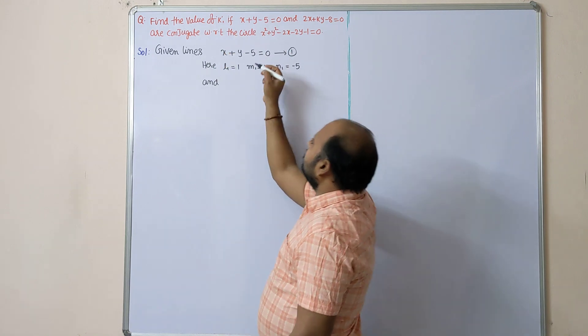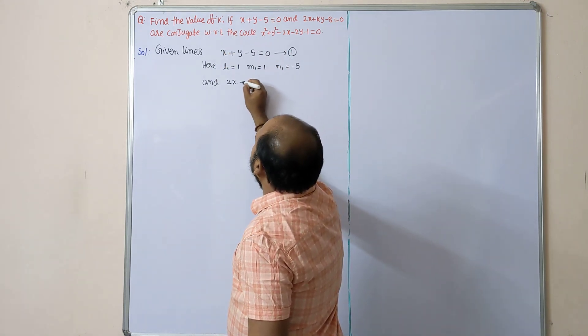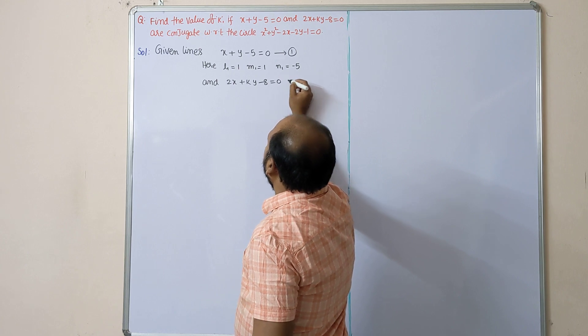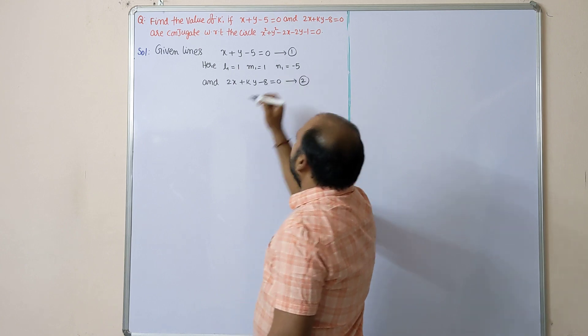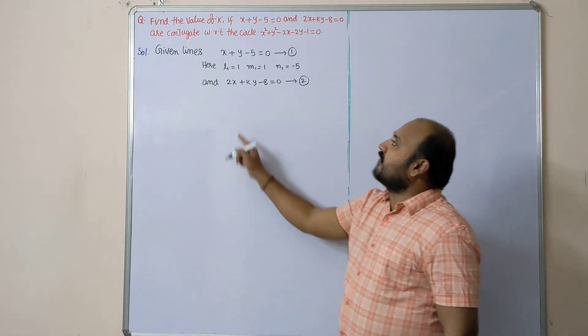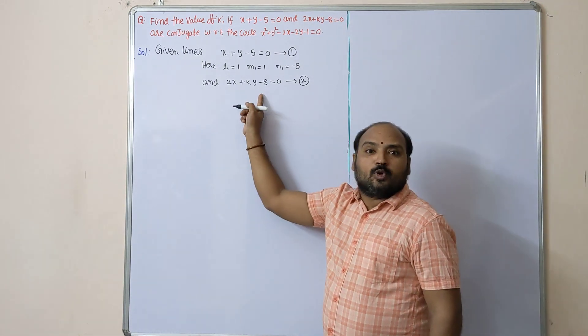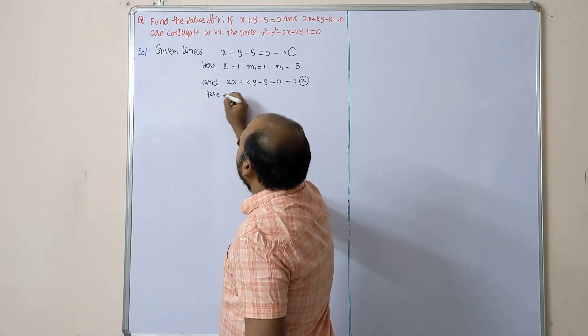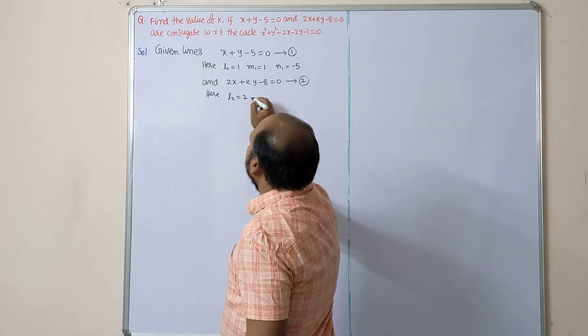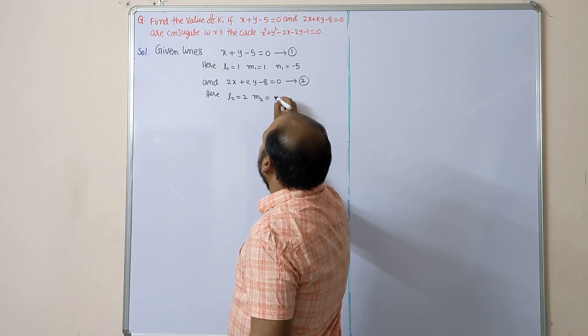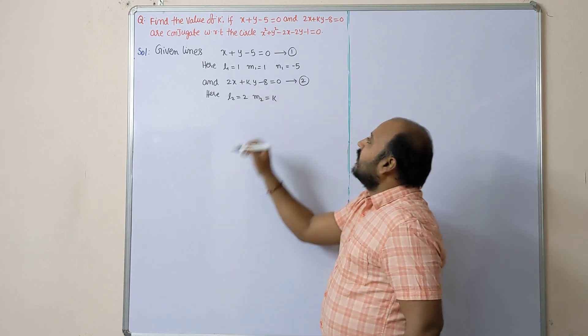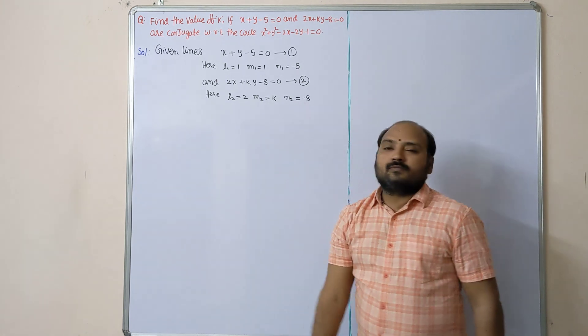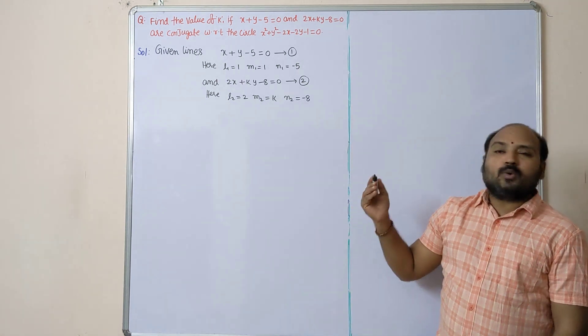Second equation: 2x + ky - 8 = 0, equation number 2. Compare with l2x + m2y + n2 = 0. Here l2 = 2, m2 = k, n2 = -8. We got l2, m2, n2 values here.